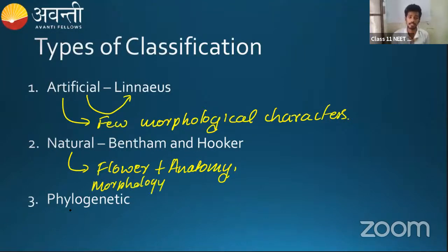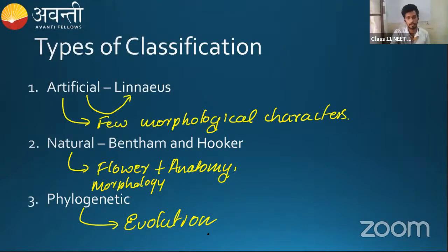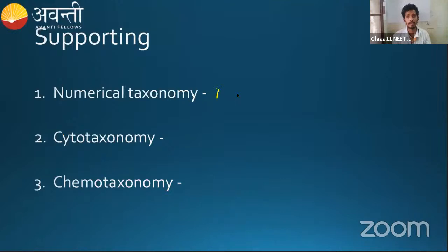Later, the phylogenetic system came. The phylogenetic system deals with evolution — we trace back how an organism developed and create a tree. What are the supports for this phylogenetic system? There are three different types of taxonomy: numerical taxonomy, cytotaxonomy, and chemotaxonomy. Numerical taxonomy is based on the number of characters — presence or absence of a character, using statistical methods.